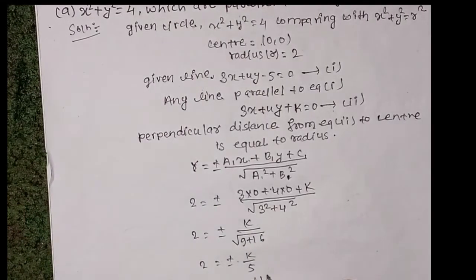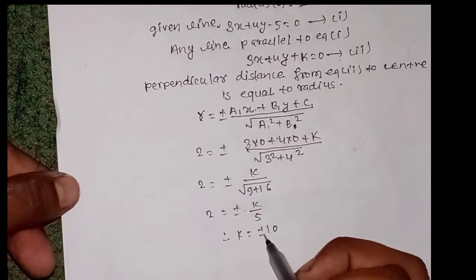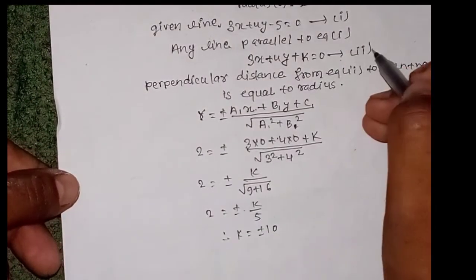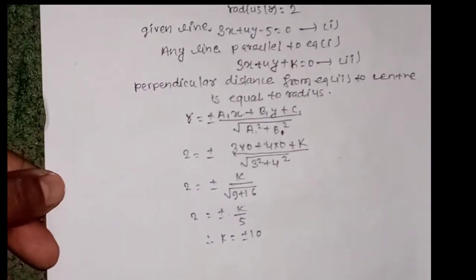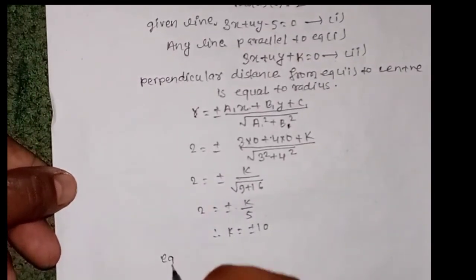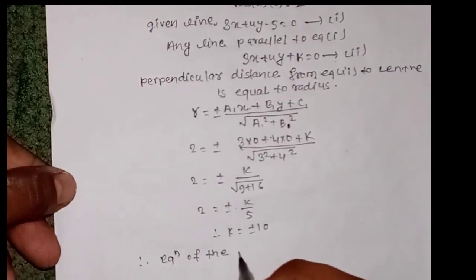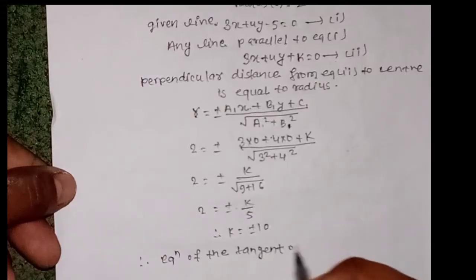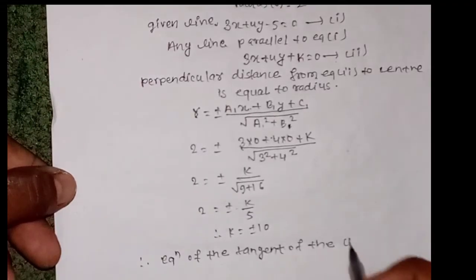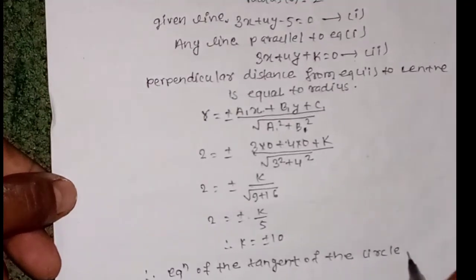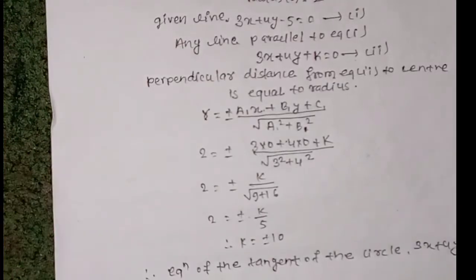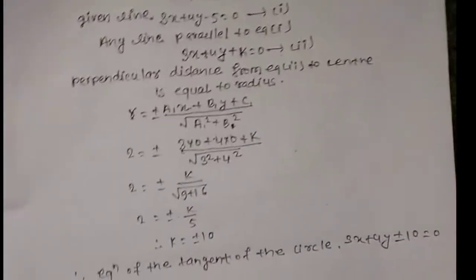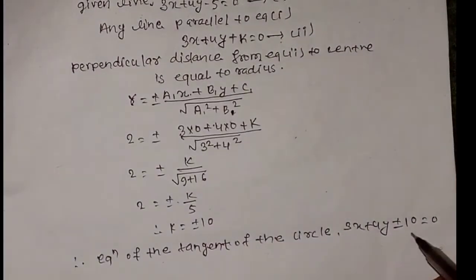Substituting k = ±10 back into equation 2, the equation of the tangent of the circle is 3x + 4y ± 10 = 0. This is our final answer.